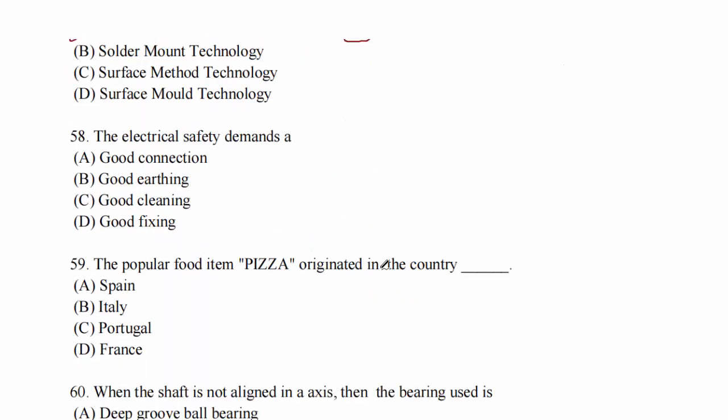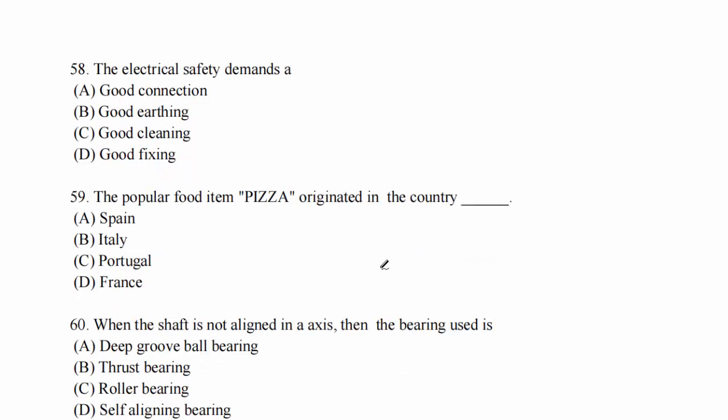Now when we purchase electronic or electrical equipment, we have concern with respect to the earthing pin, like washing machines, refrigerators, laptops. The electrical safety demands good connection, good earthing, good cleaning, good fixing. So the important thing is earthing. Option B. Next question: the popular food item pizza originates from which country? Italy. Option B. Question 60: when the shaft is not aligned in axis, then the bearing used is self-aligning bearing. Option D.